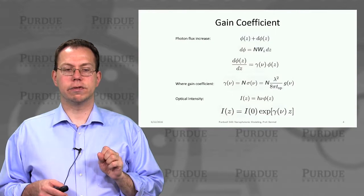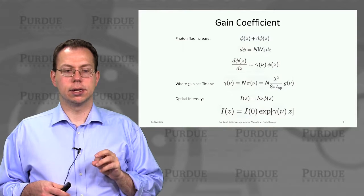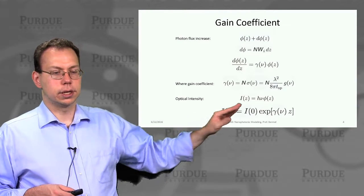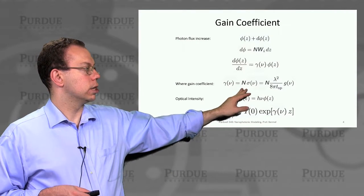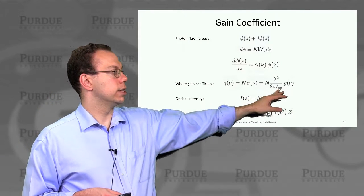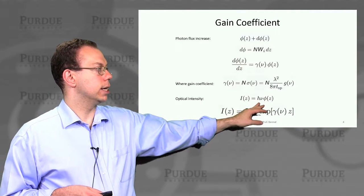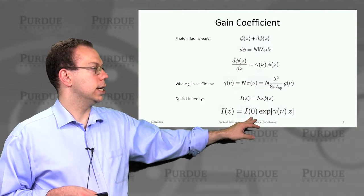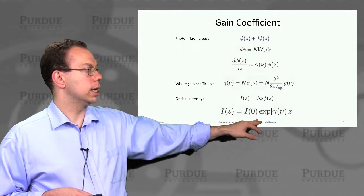In terms of the gain coefficient of this sort of system, we can estimate based on the equations presented earlier. The gain coefficient is basically the number of atoms times the cross-section of each atom, and it can also be written in an alternate form. If we think of the optical intensity as being h-nu times the photon flux phi, then the intensity as a function of the propagation distance would be like e to the gamma z.